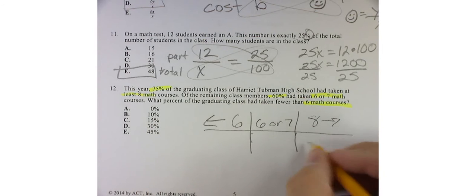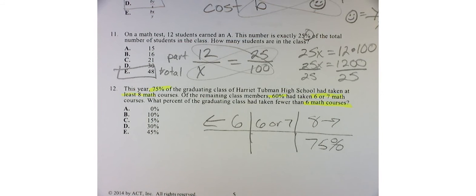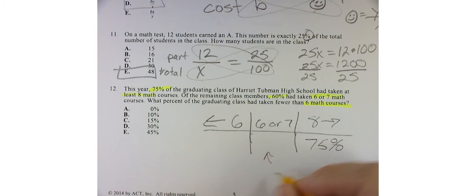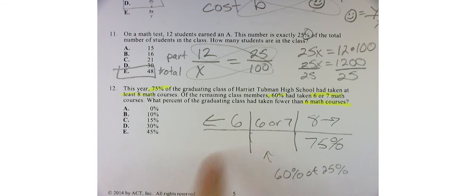75% of the graduating class had taken at least eight. Okay. Now, 60% of the remaining. So, what this is, is 60% of the remaining 25%. All right. Because the remaining percent is 25, right? If this is 75, then this is 75%. So, now,